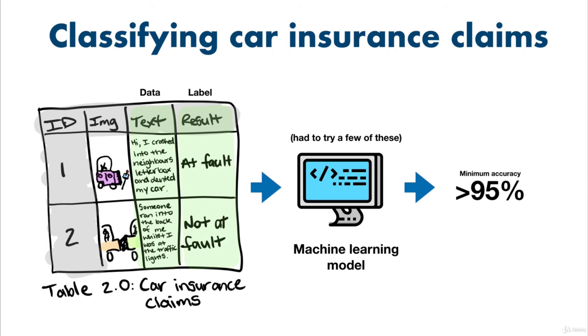The car insurance company we partnered with wanted at least a 95% accurate model to consider the project worth continuing. This meant the model I was building had to be able to read a car insurance claim and predict with 95% accuracy who caused the accident. This meant it was only allowed to get it wrong one out of 20 claims.